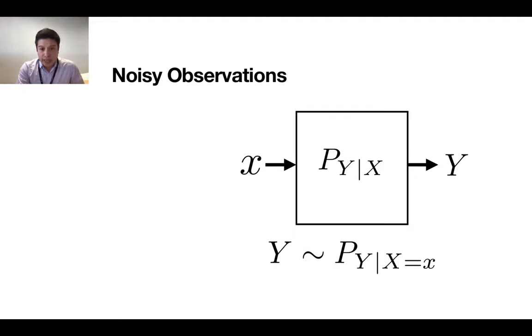For every possible input of the channel, we have a random variable whose distribution is p y given x equal little x. Essentially, it is a random variable whose probability distribution is parametrized by the input of the channel. This is the big picture of what we understand by noisy observations, and this is what is going to be at the center of this stock.